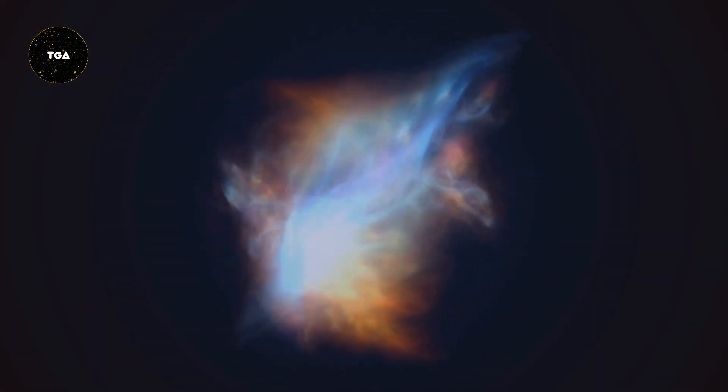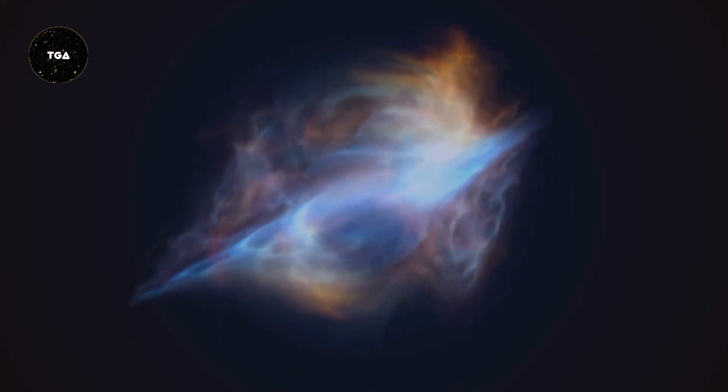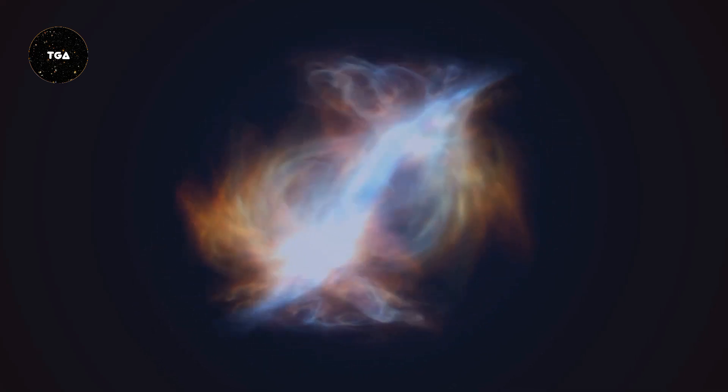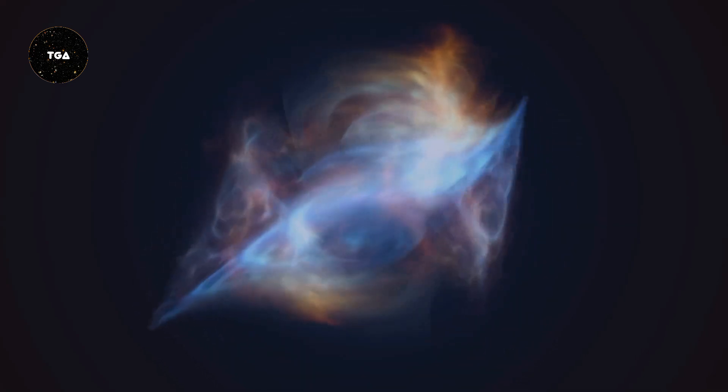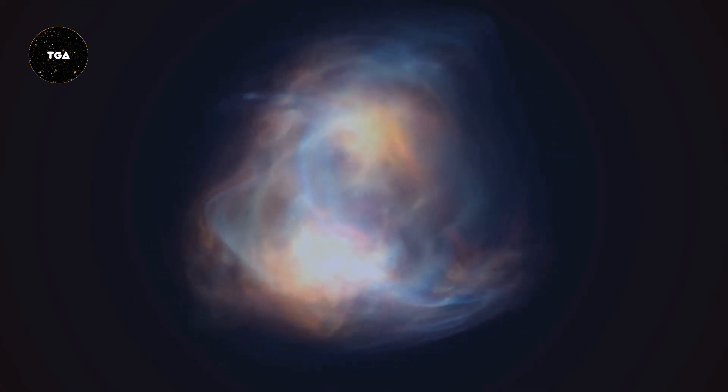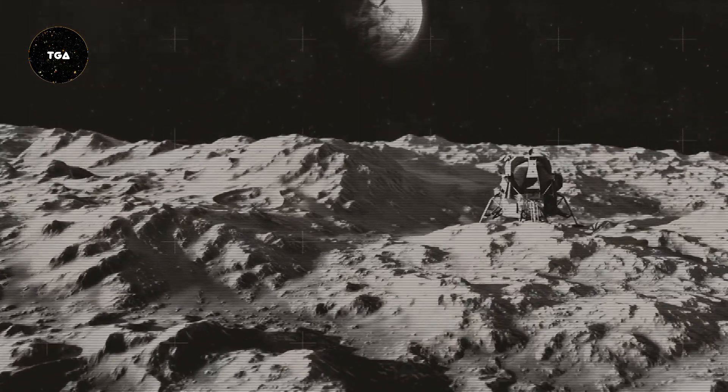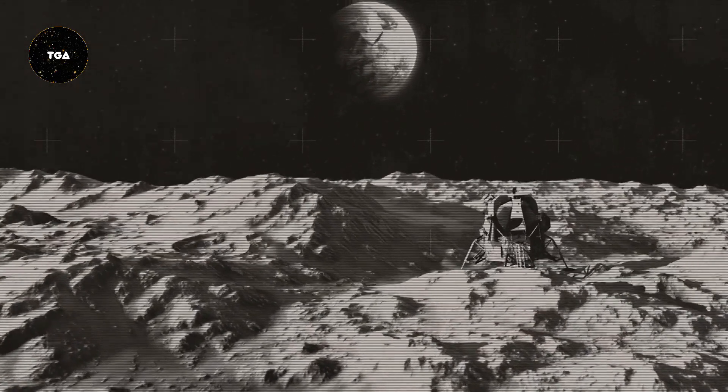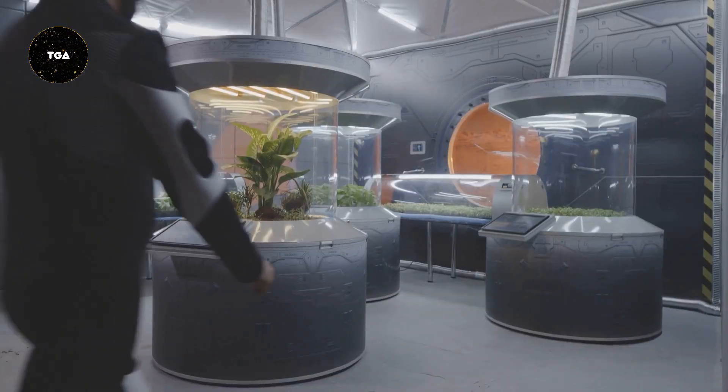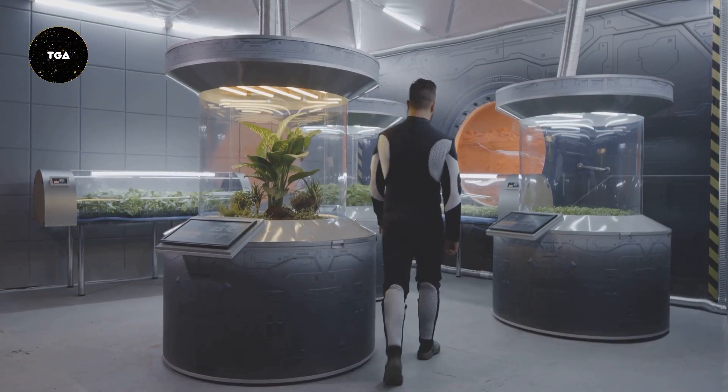Gamma ray bursts: The universe's most powerful blasts. Gamma ray bursts, or GRBs, are the most energetic events in the universe. They are short-lived bursts of gamma ray light lasting from milliseconds to several minutes. GRBs were first discovered in the 1960s by satellites designed to detect gamma radiation from nuclear explosions. Since then, they have been a major area of research in astrophysics.